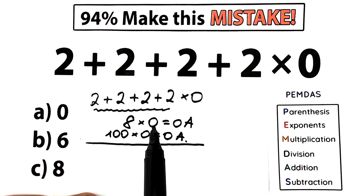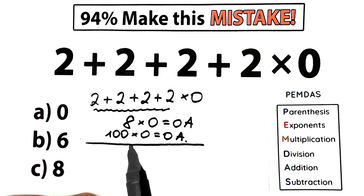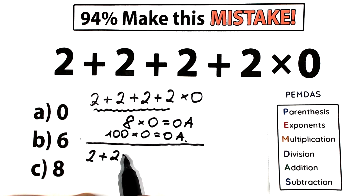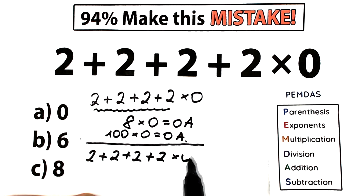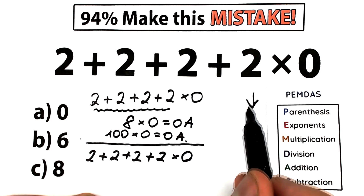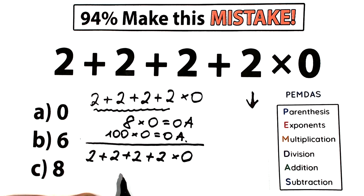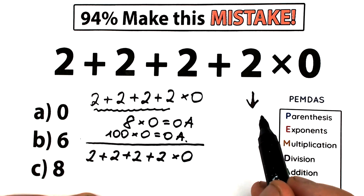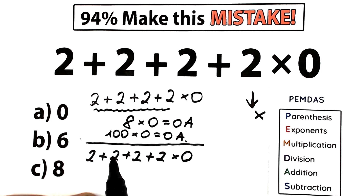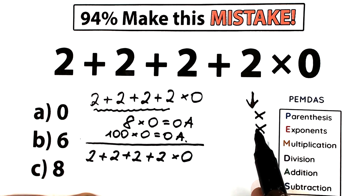Let's solve this question according to PEMDAS and check whether 0 is the correct answer. Here's our question: 2 plus 2 plus 2 plus 2 and times 0. The first step is parentheses — do we have any parentheses? I don't see any, so we go to the next step. The next step is exponents — do we have any, maybe 2 squared or 2 cubed? I don't see any exponents either, so we skip both of those steps.